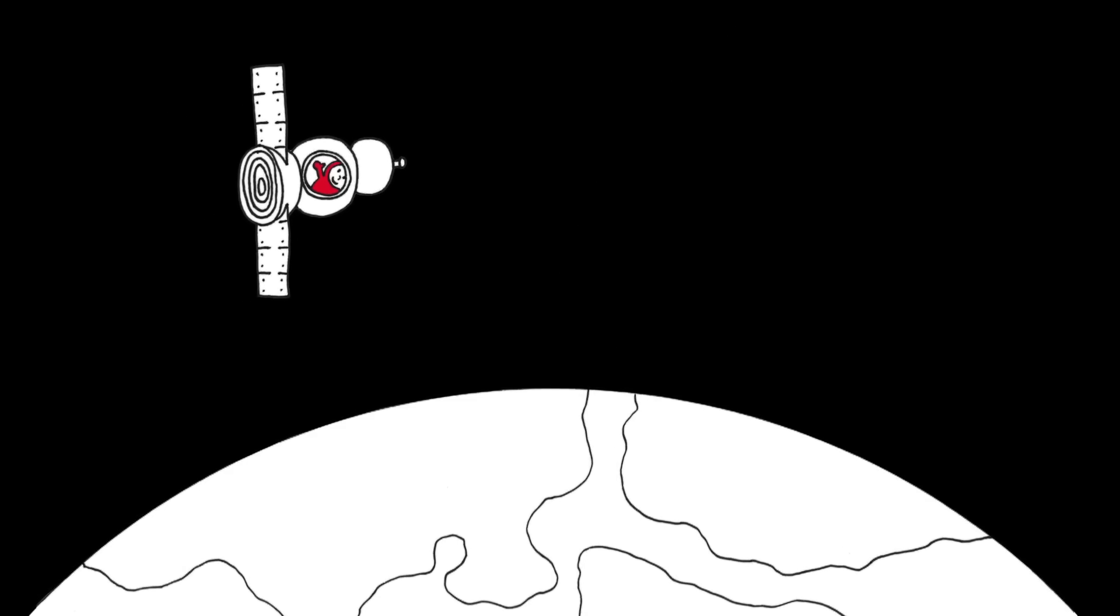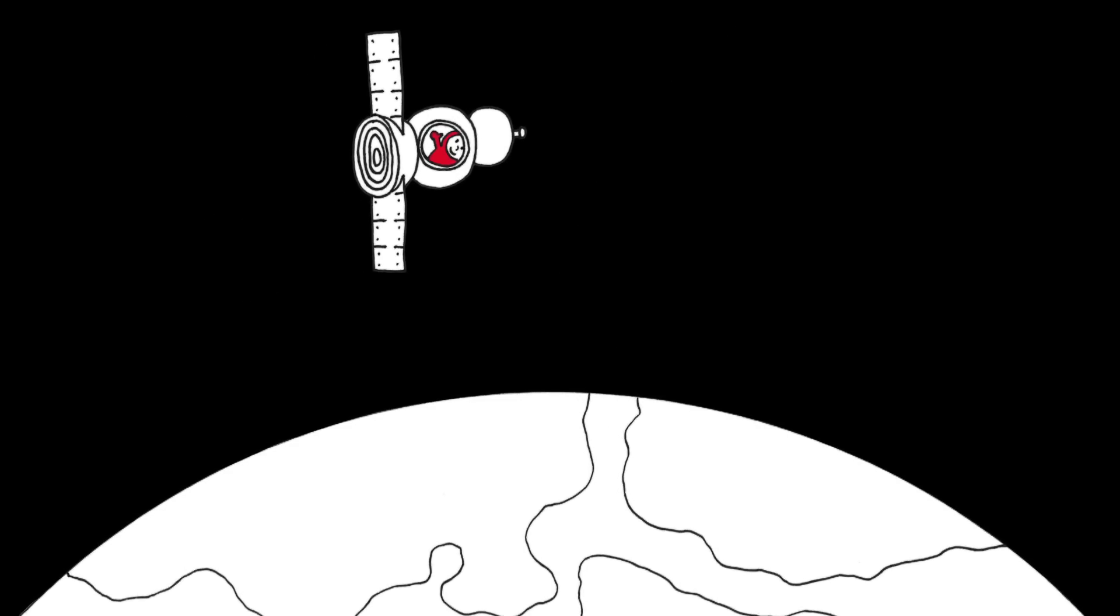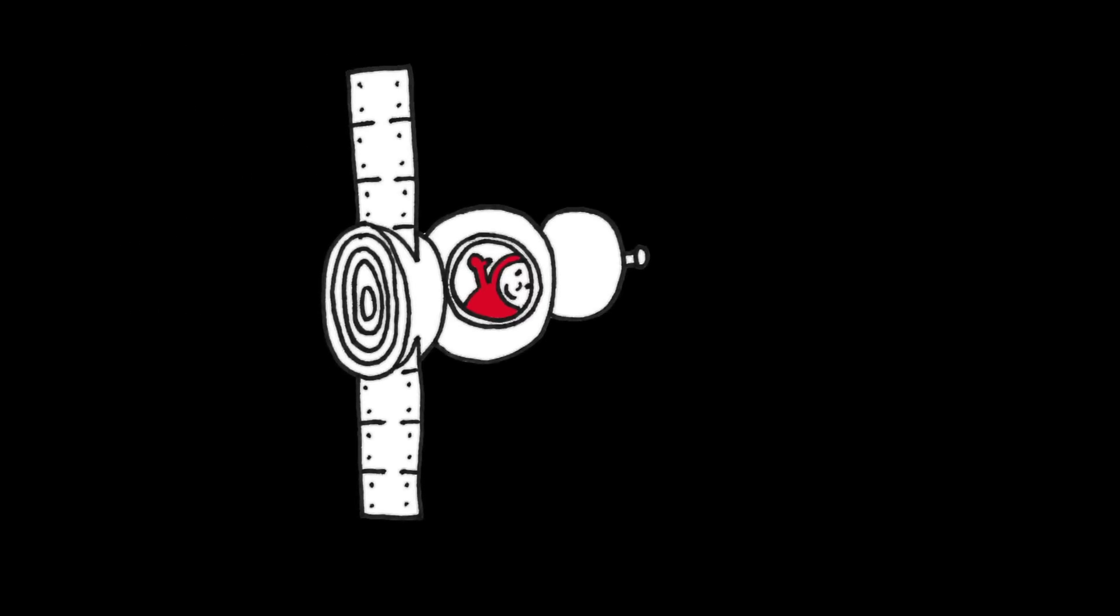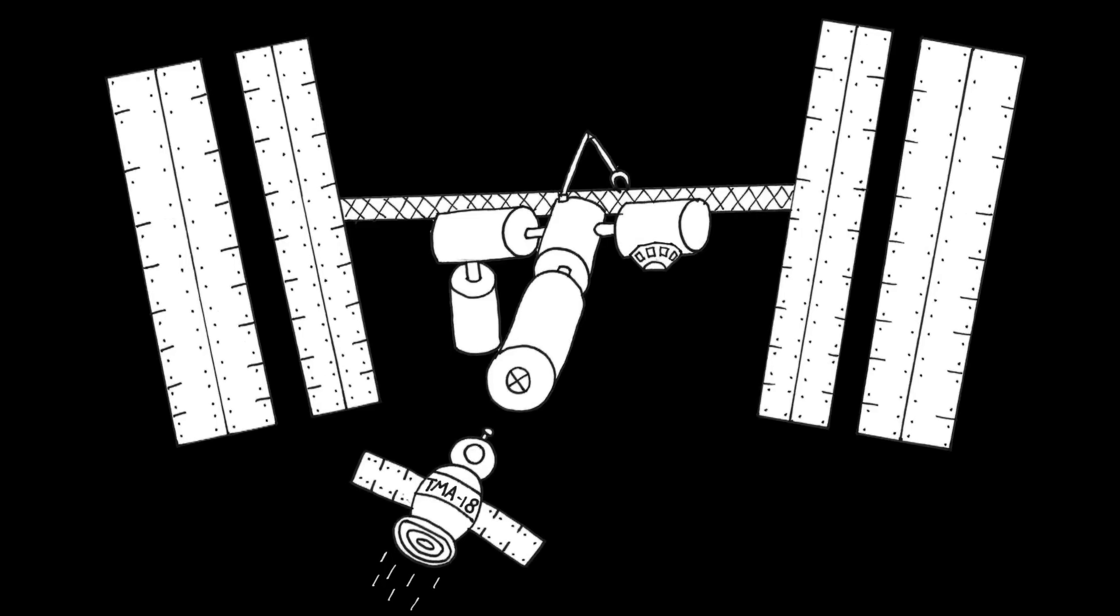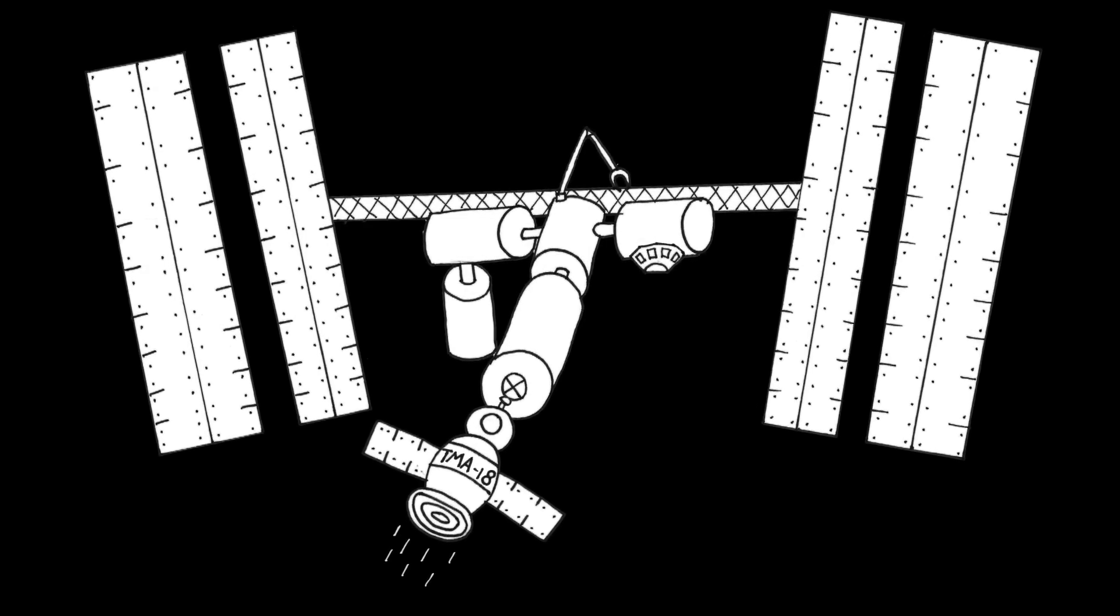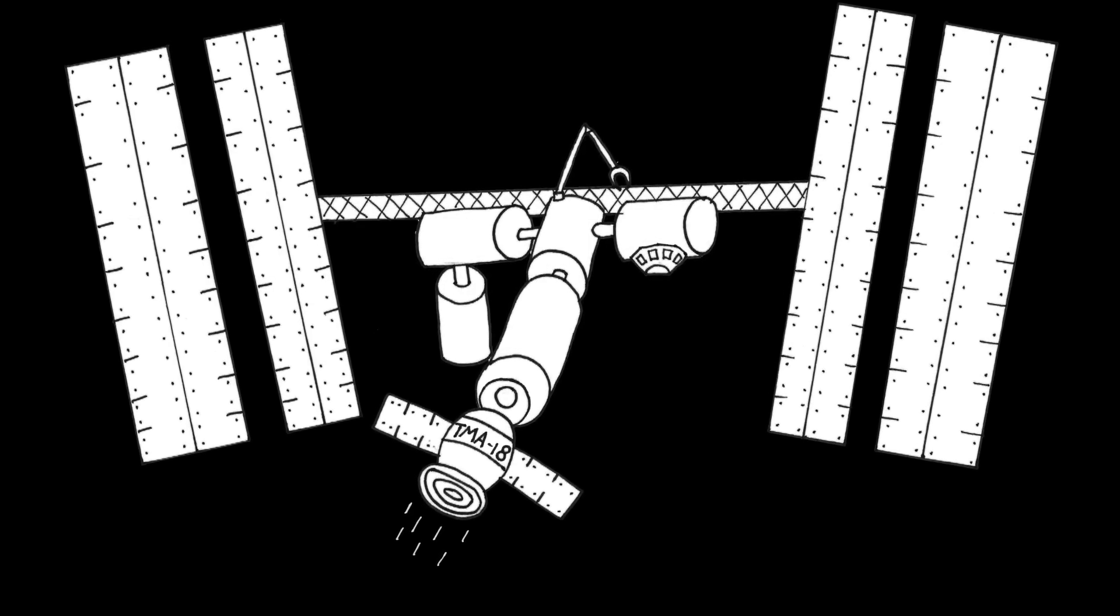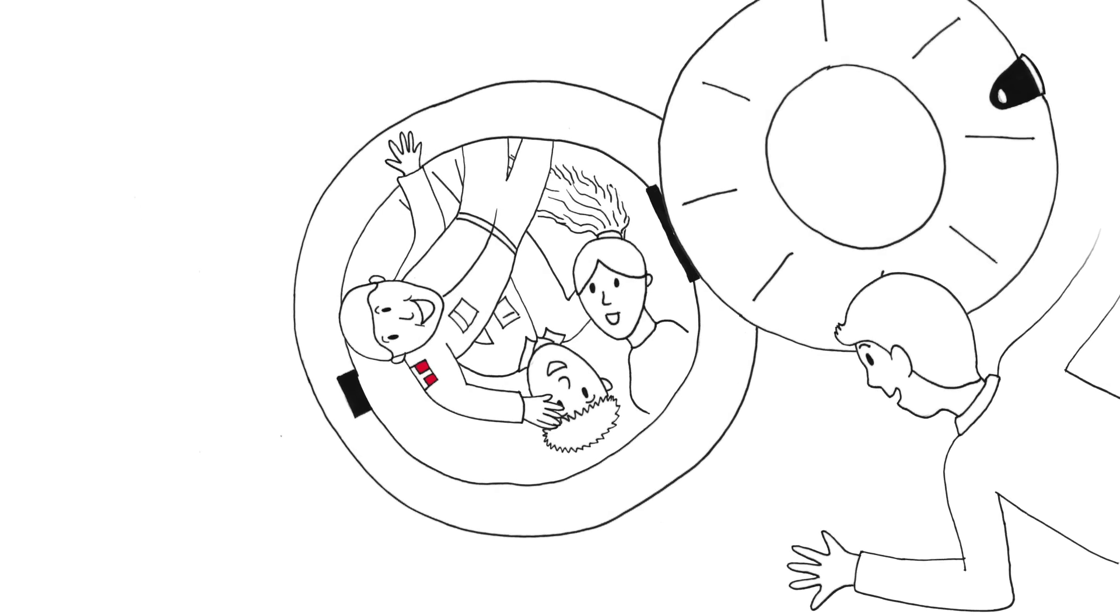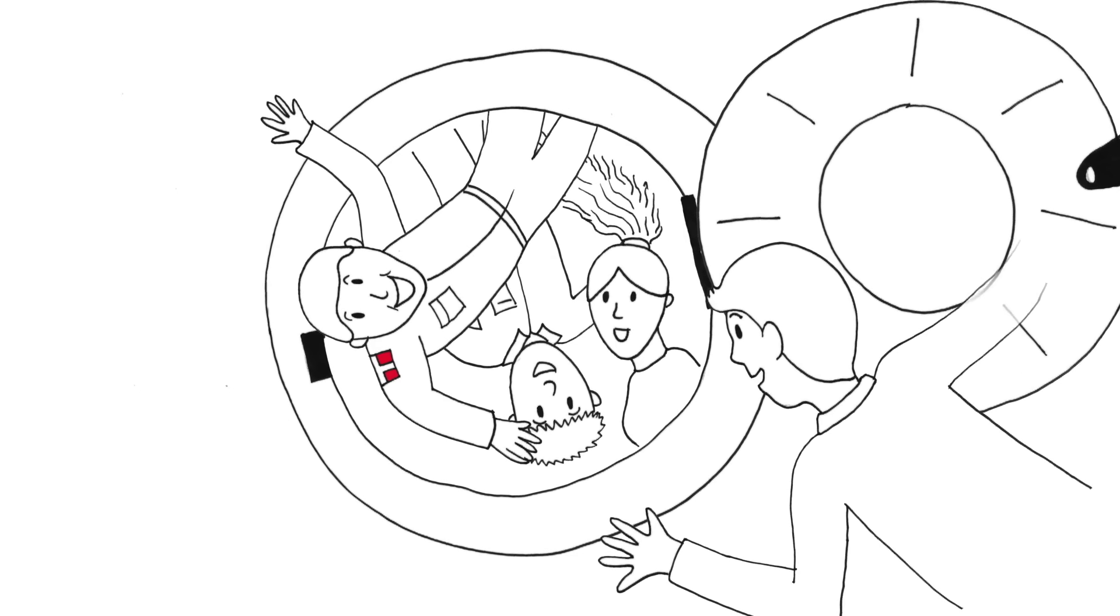It only takes our spacecraft six hours to arrive at the International Space Station, which orbits the Earth at 400 kilometers above our heads. The station is the only human outpost we have in space. We dock to it, and our crewmates open the door for us. They have been waiting for us, and we can now join them in our new home.